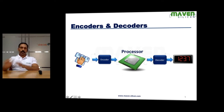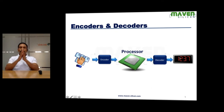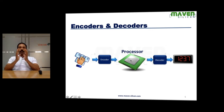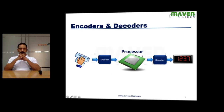The output is also going to be binary. The decoder converts the output binary back into display format. The processor running inside the laptop is a digital component — it can understand only binary information. What goes in and what comes out of the processor is always binary. That's why you need components like encoder and decoder.